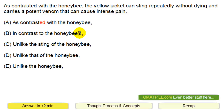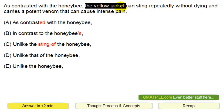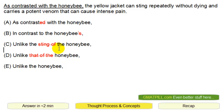This apostrophe 's' is the issue here. You want to compare directly the honeybee to the yellow jacket. Unlike the sting of the honeybee — we're not comparing the sting. Even though there's a sting mentioned, we want to compare the bees directly to each other, not the stings of the bees. Unlike that of the honeybee — we're not talking about 'that of.' We want the honeybee directly.